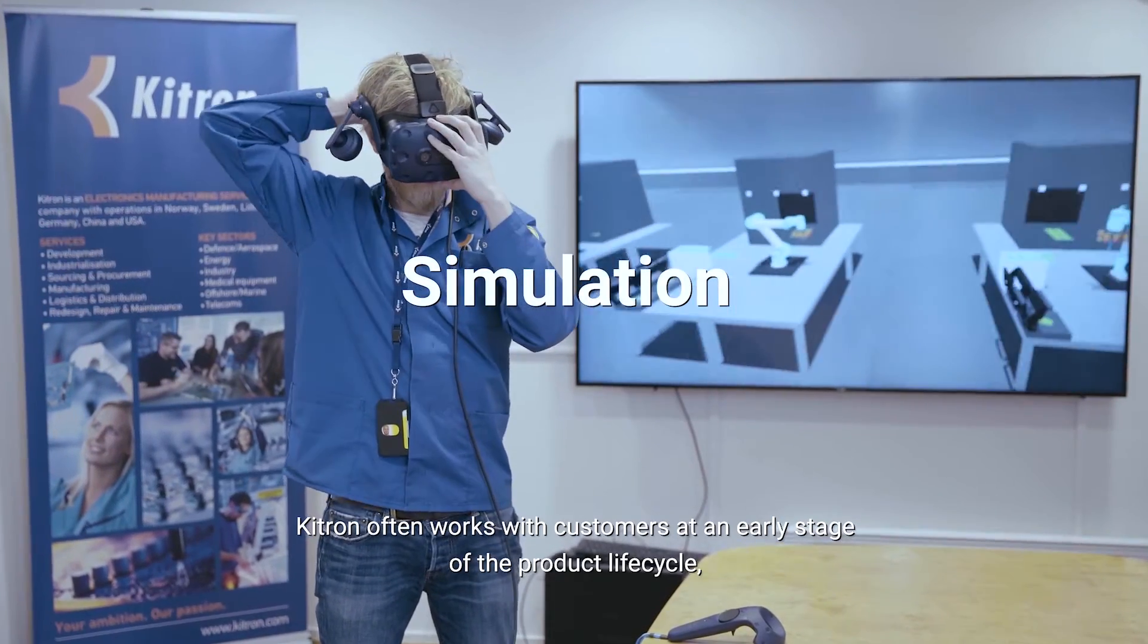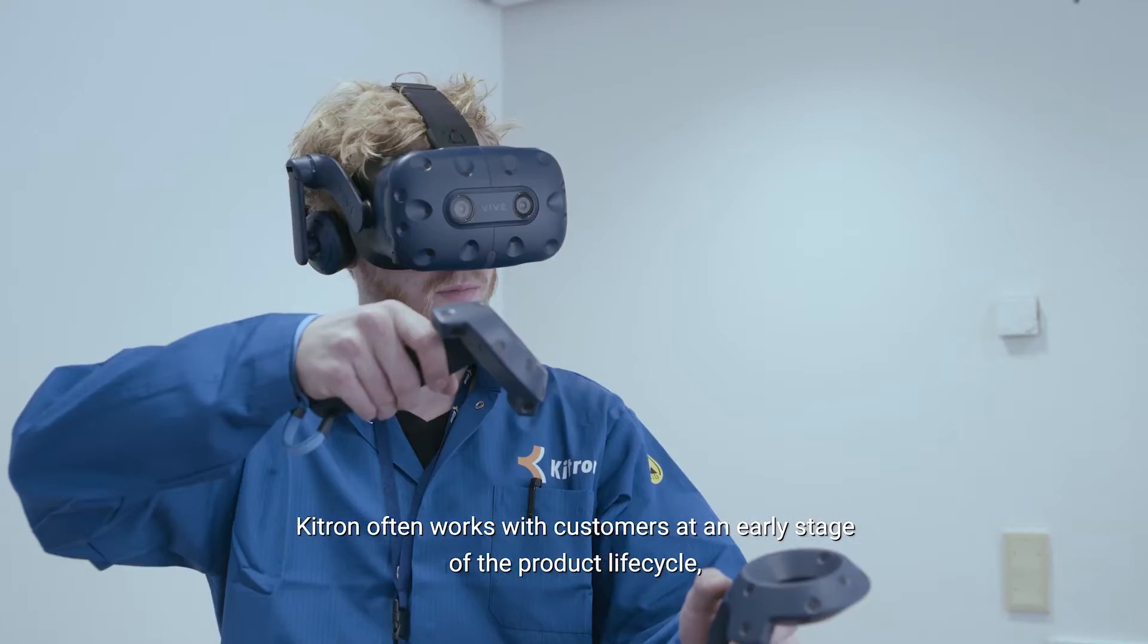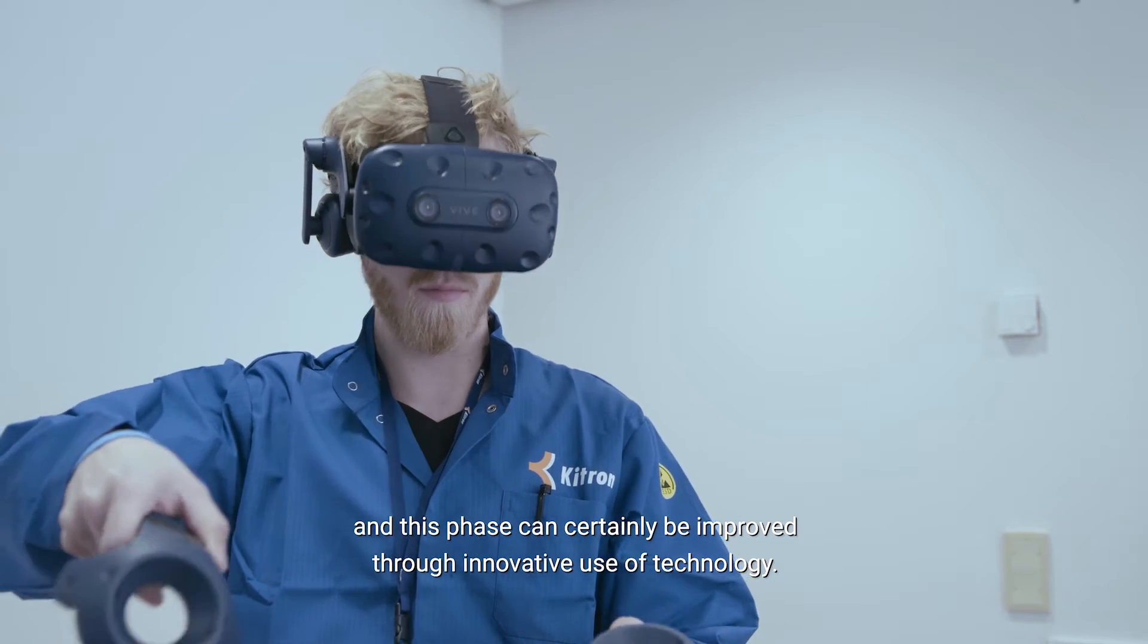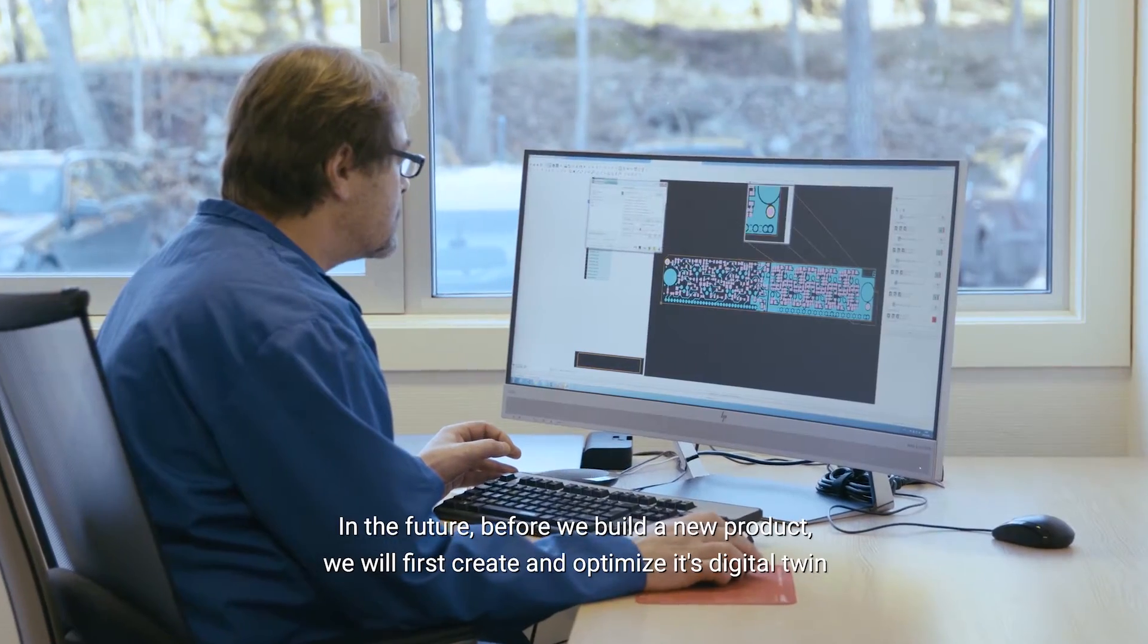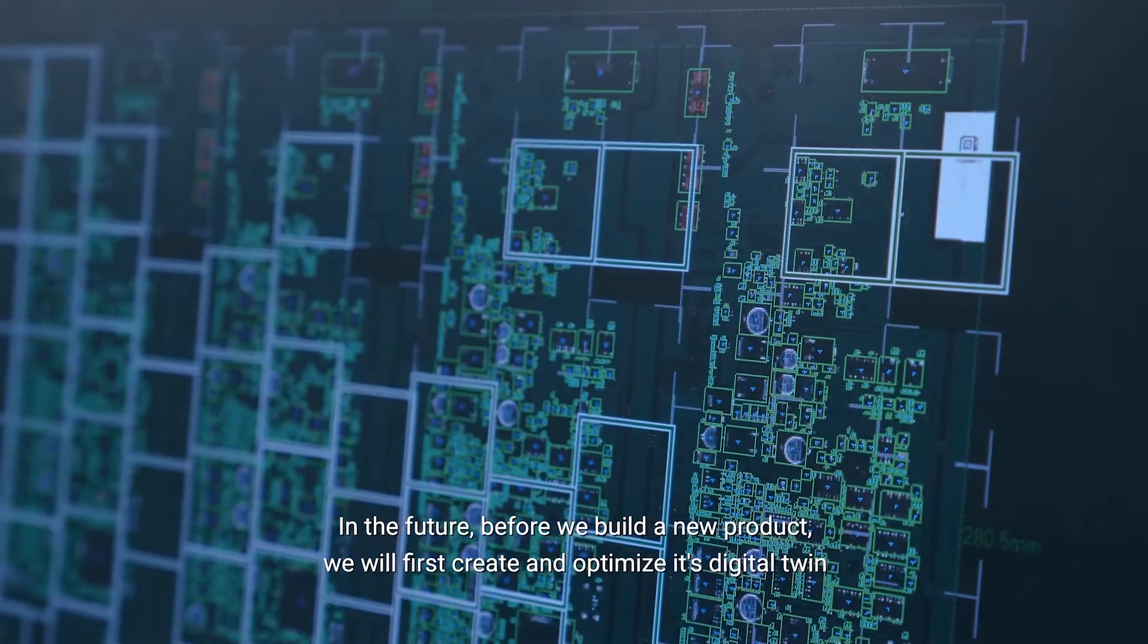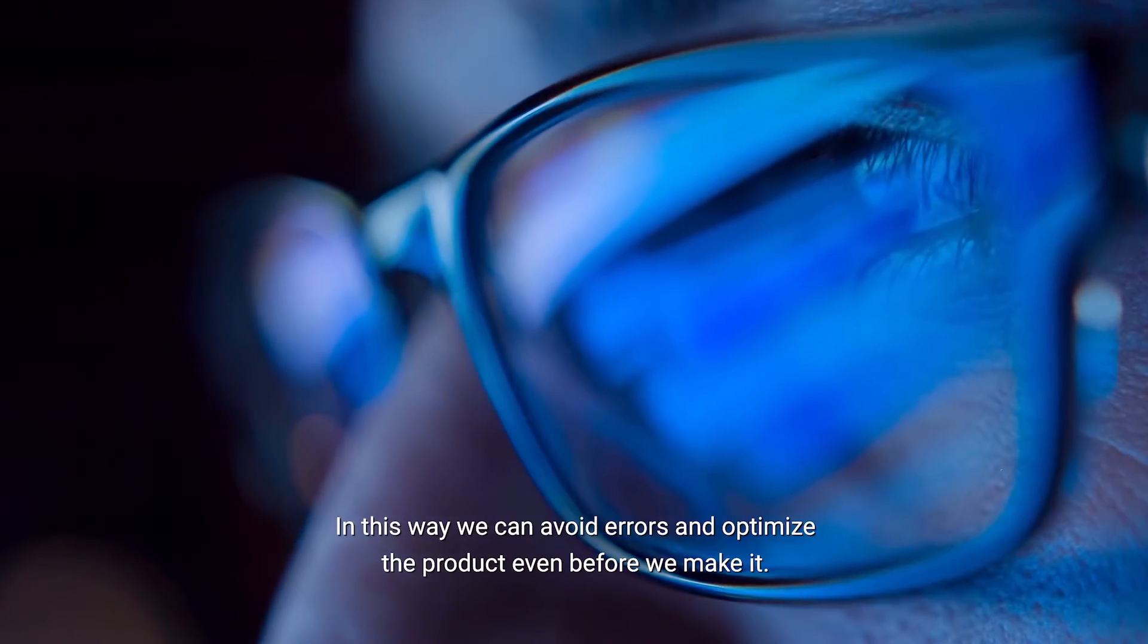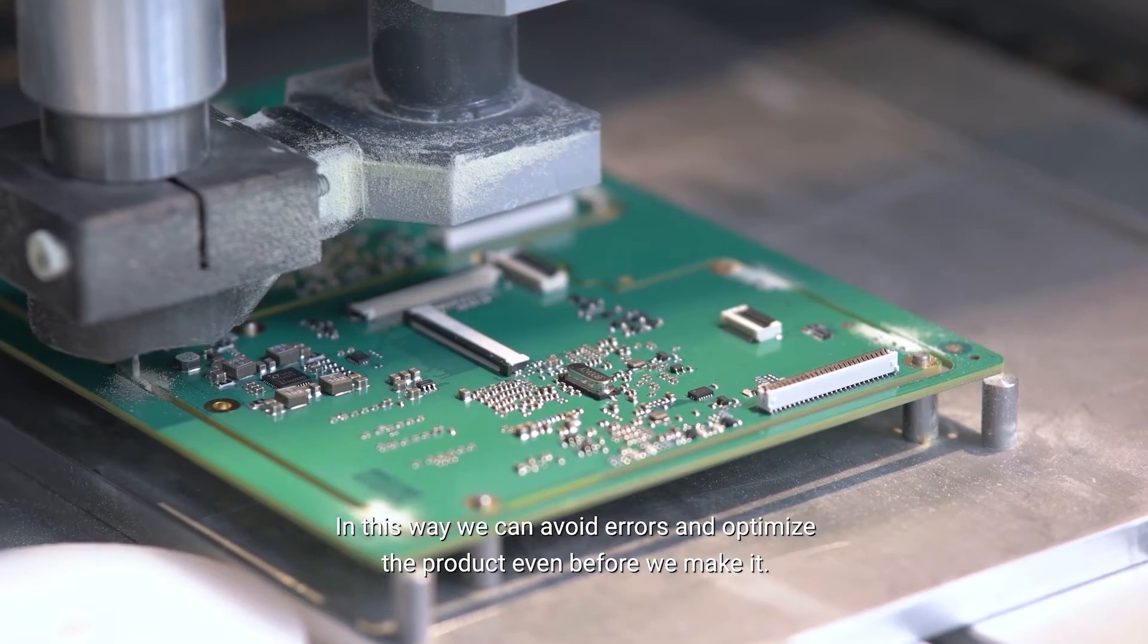Kitron often works with customers at an early stage of the product lifecycle, and this phase can certainly be improved through innovative use of technology. One example is simulation. In the future, before we build a new product, we will first create and optimize its digital twin using a software model. In this way, we can avoid errors and optimize the product even before we make it.